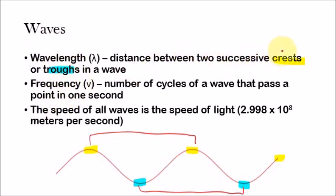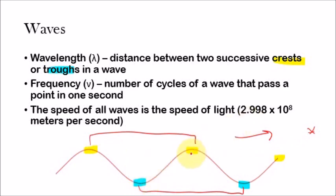Frequency is a little more difficult to comprehend. Frequency is the number of cycles of a wave that pass a point in a given second. So let's say we have a point right here and this wave is traveling in this direction. The number of cycles — like one cycle would be just this bracket here — the number of those cycles that pass a given point in one second is called the frequency.